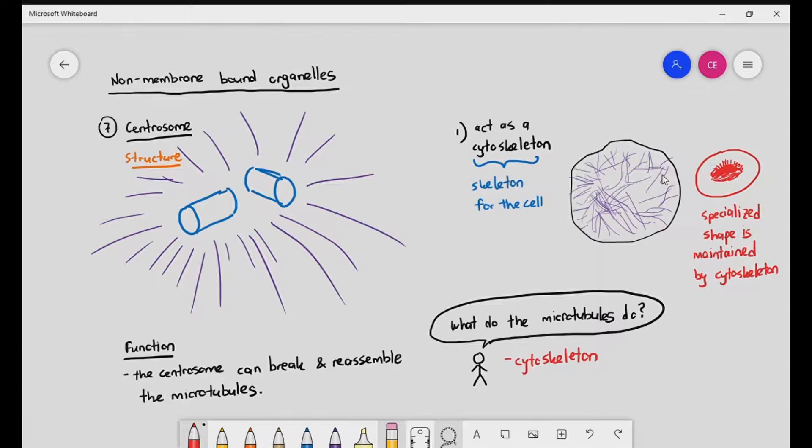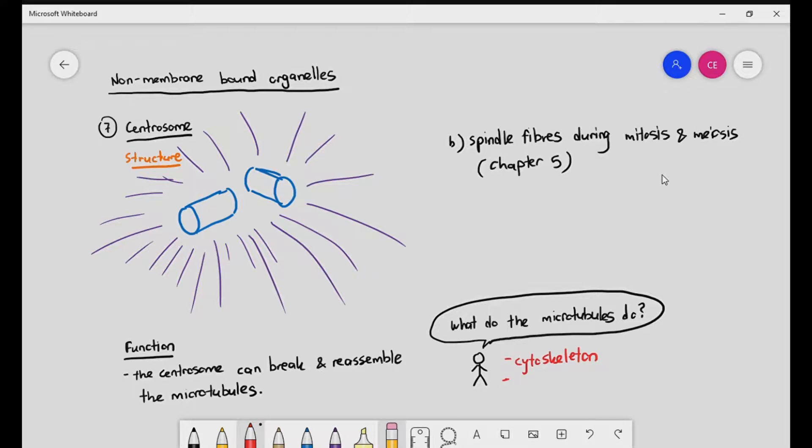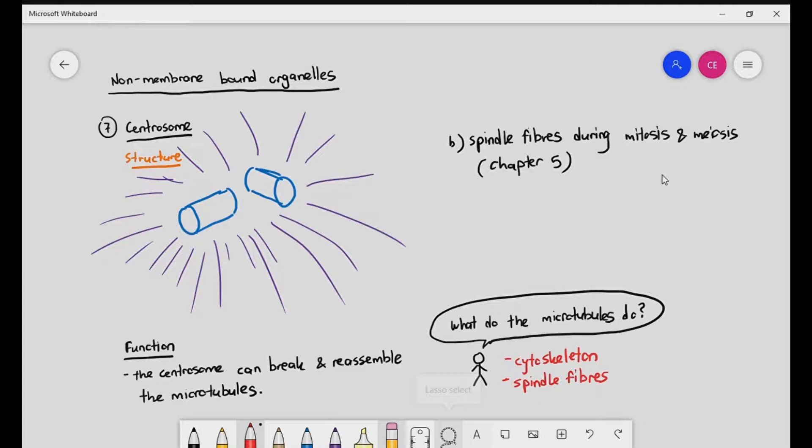It also forms spindle fibers during mitosis and meiosis. We are going to see this in Chapter 5, so you don't have to worry about that yet. Just be aware, if you're writing down notes, just put it over here and put a note to say that we are going to look at this again in Chapter 5. I will be sending a reminder when we are covering the mitotic cell cycle.